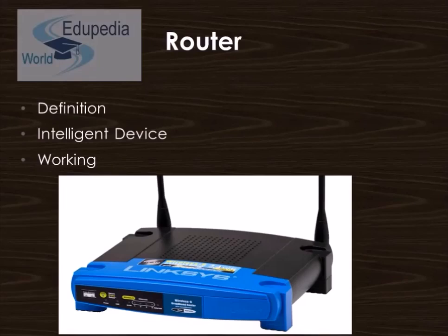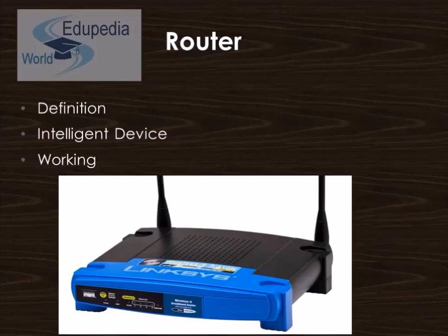Now comes the Router. It is a networking device that forwards data packets between computer networks. Routers perform the traffic directing functions on the internet. A data packet is typically forwarded from one router to another through the networks that constitute the internet until it reaches its destination node. A router is called an intelligent device as it creates and maintains a table called a routing table of available routes and their conditions, and uses this information along with distance and cost algorithms to determine the best route for a given packet.